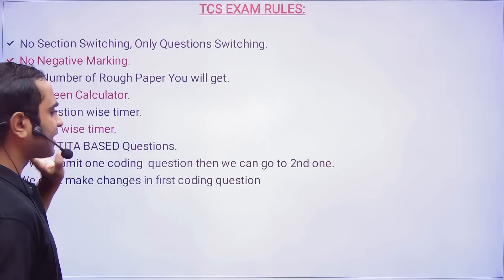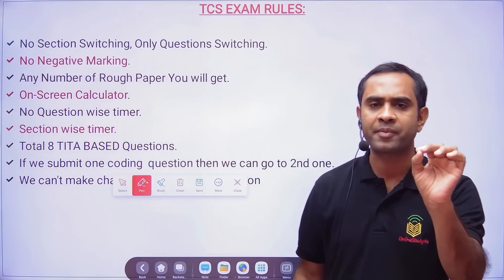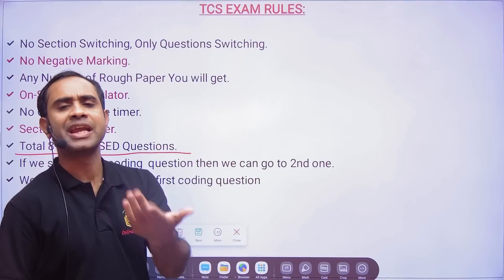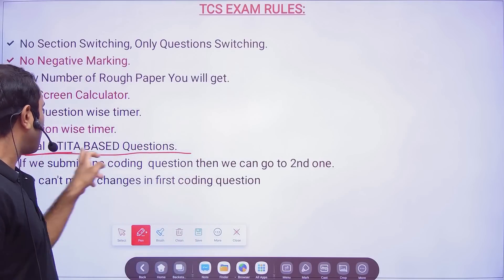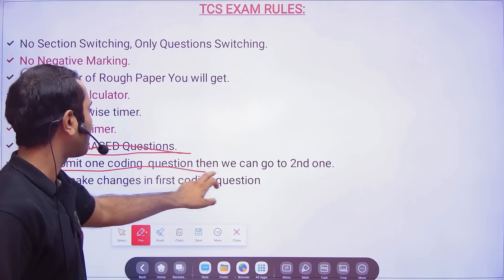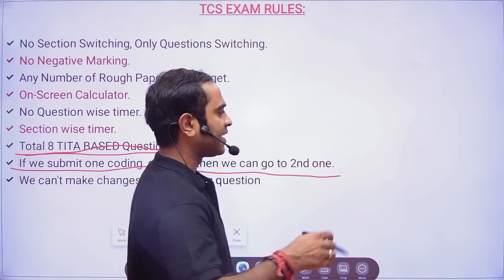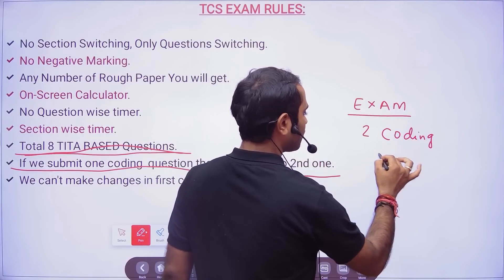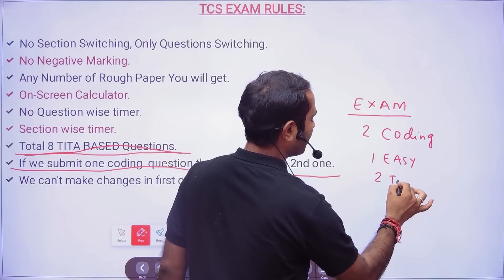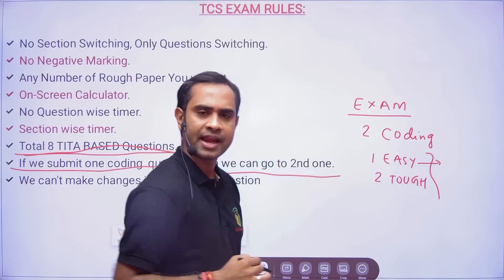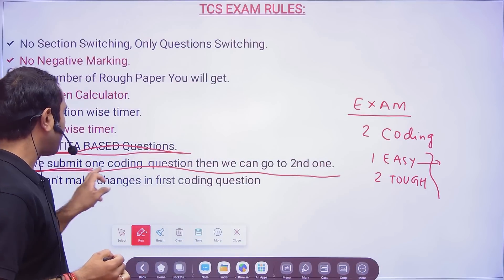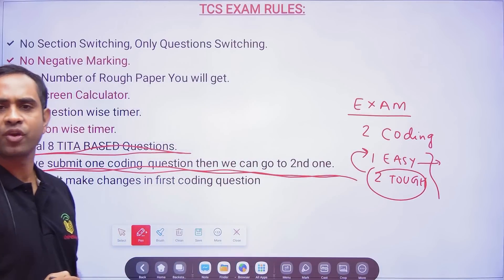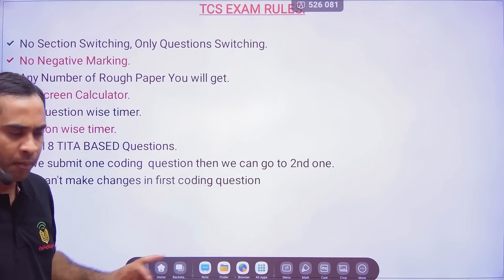There will be a section-wise timer — 25 minutes per section. The total theta-based questions is approximately 8, though it might be 9 or 6. For the coding section: there will be two coding questions, one easy and one tough. You must submit the first coding question before you can access the second. Once you move to the second coding question, you cannot go back and make changes to the first one.